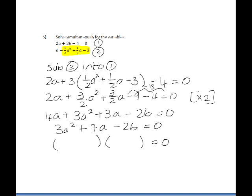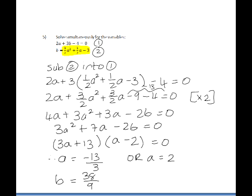That will factorize into 3a plus 13, and a minus 2. So therefore, a will be negative 13 over 3, or a will be positive 2. Substitute back into equation 2 to solve for b, and you get b is 38 over 9, or b is equal to 0.